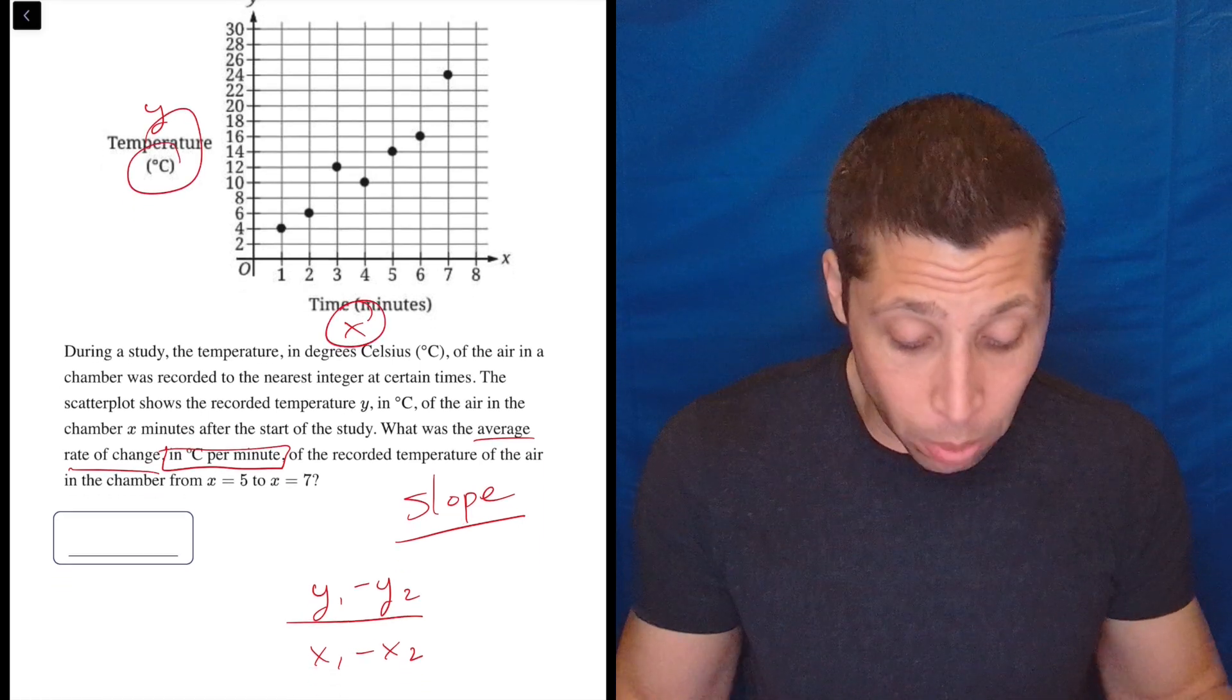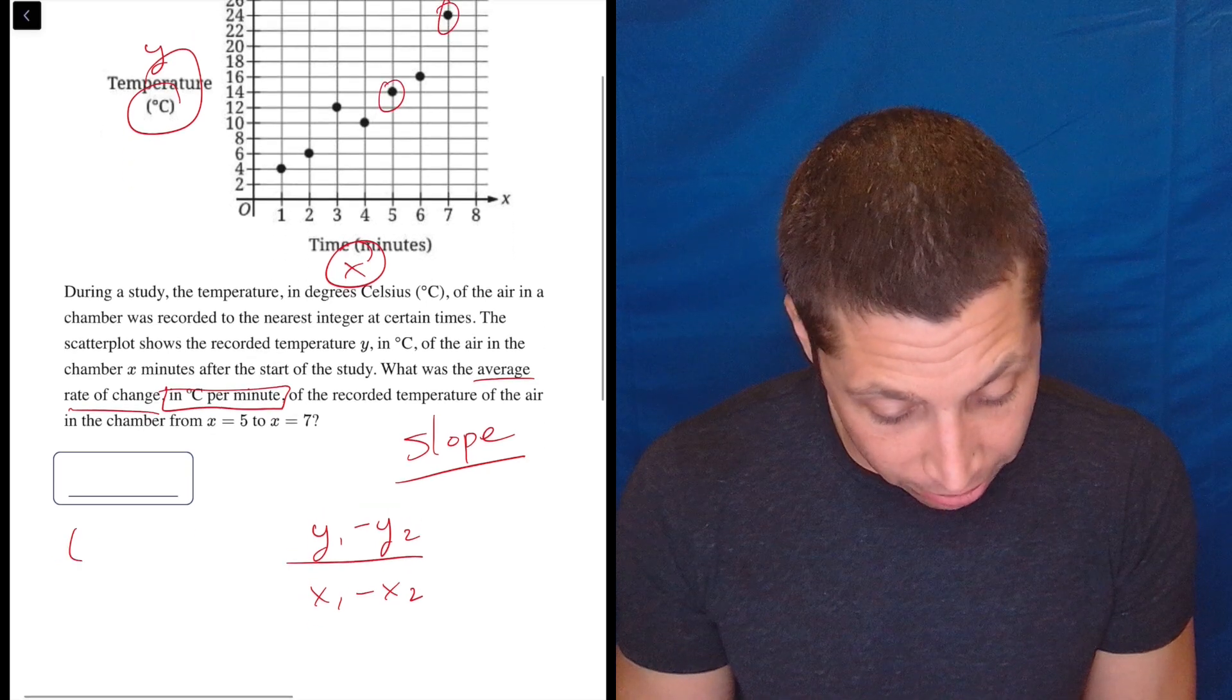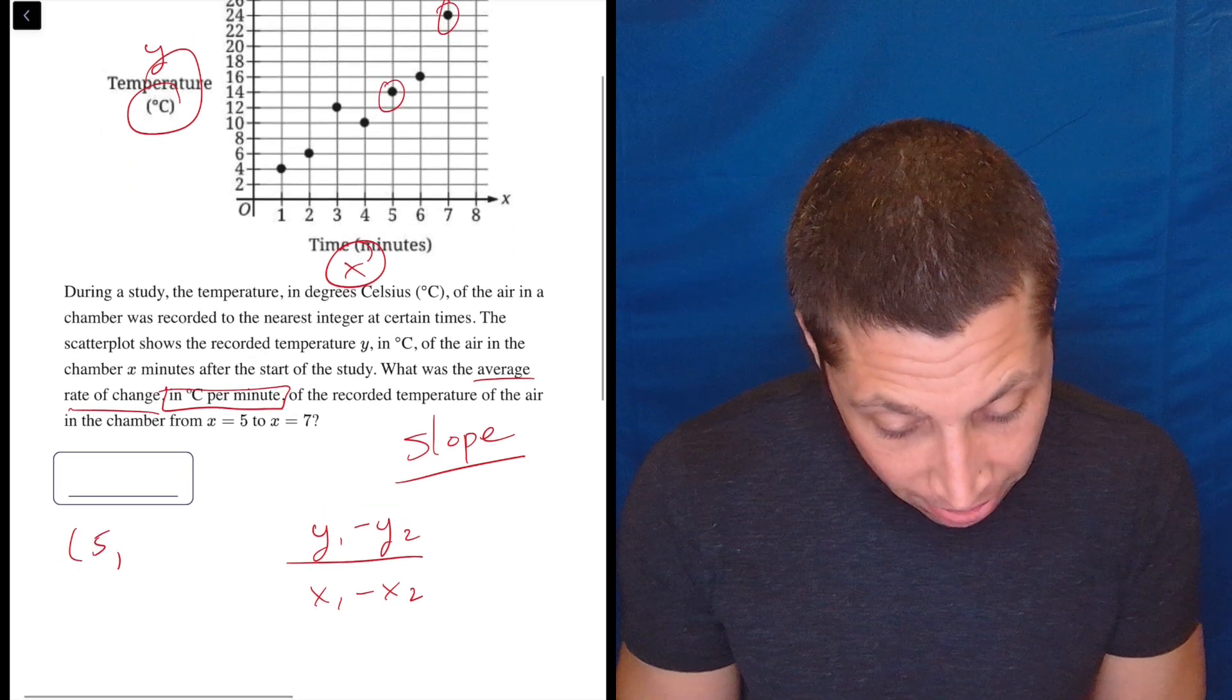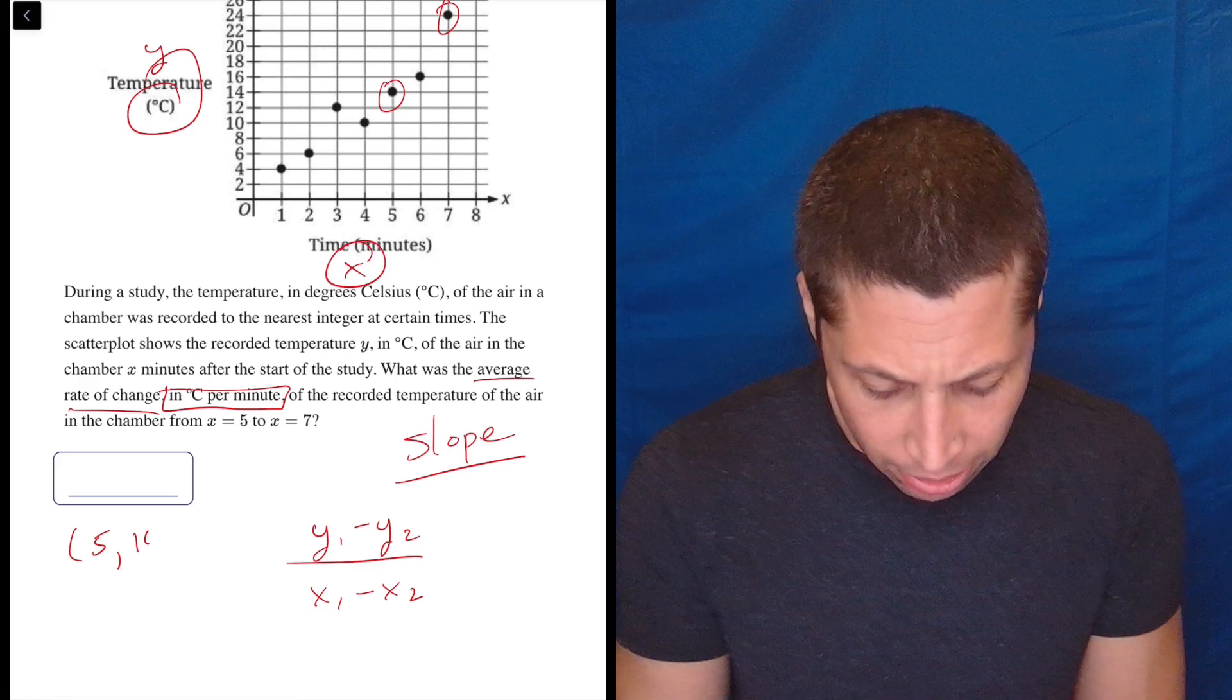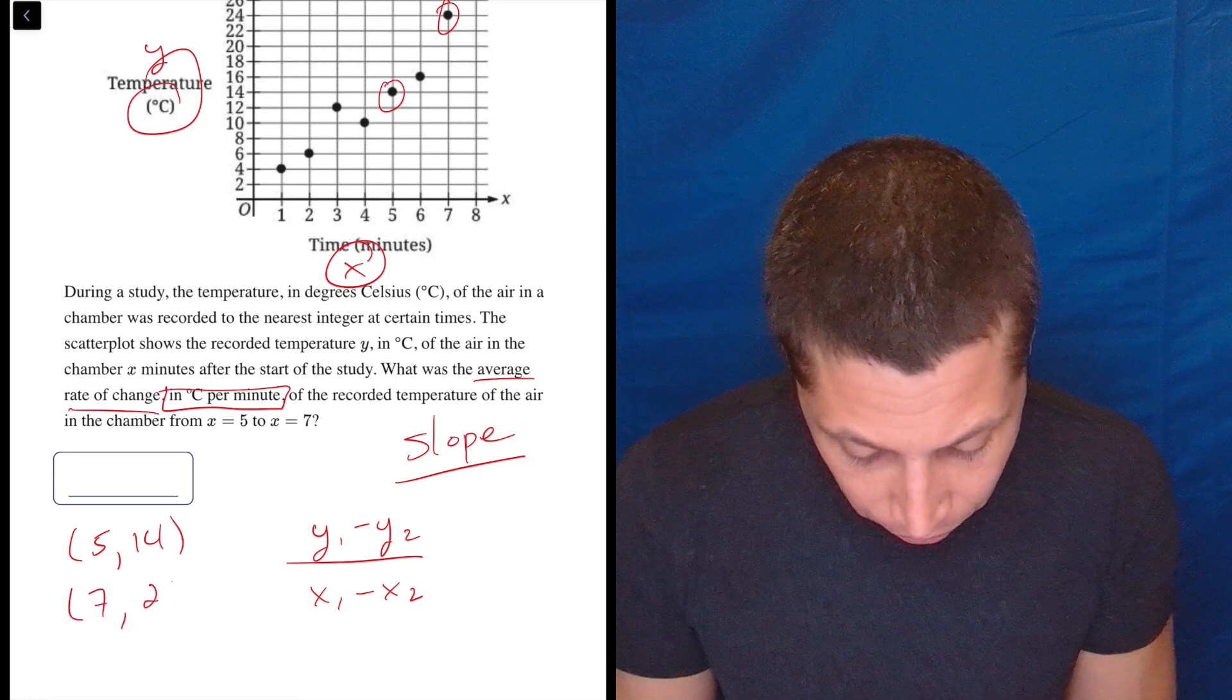And so let's just get these points and plug them into the formula. So one is here, one is here. Let's write them down because I'm going to run out of space. 5 is my x, and 14 is my y, and 7 is my x, and 24 is my y.